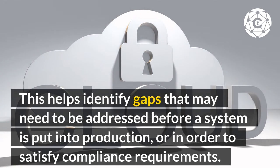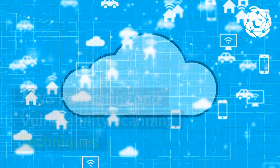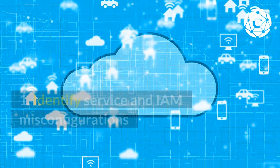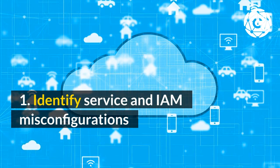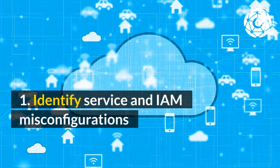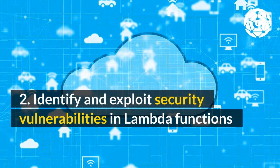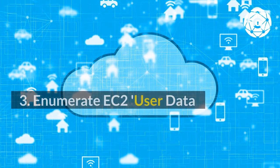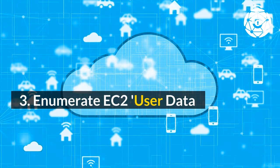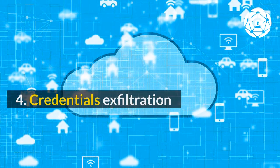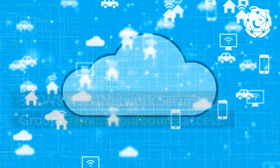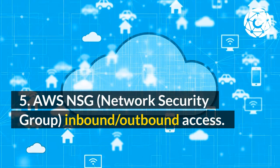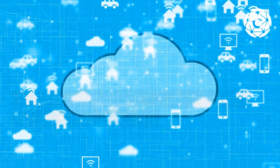AWS Penetration Testing is also used to satisfy compliance requirements. AWS Penetration Testing and Vulnerability Scanning Techniques: 1. Identify Service and IAM Misconfigurations. 2. Identify and Exploit Security Vulnerabilities in Lambda Functions. 3. Enumerate EC2 User Data. 4. Credentials Exfiltration. 5. AWS NSG (Network Security Group) Inbound/Outbound Access.